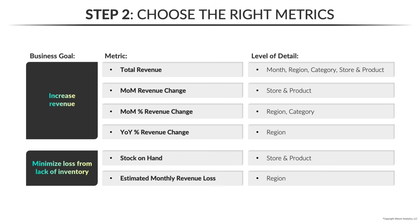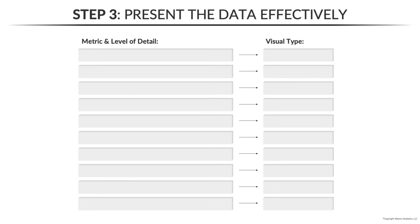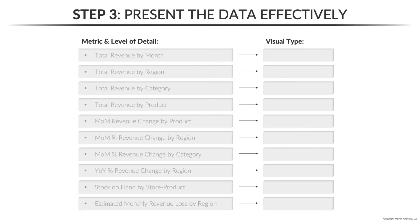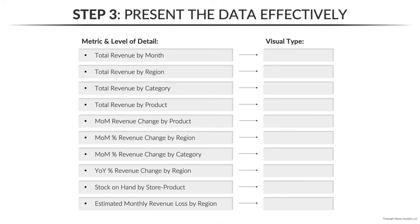Keep in mind this isn't a black-and-white exercise. In reality, you'll likely iterate and evolve this list as you start designing the dashboard, and more importantly, as you start getting actual feedback from your end users. So this takes us to step three: presenting the data effectively. Here's where we take all that information from step two — the metrics and the level of detail — and start thinking about the best way to visually represent them.